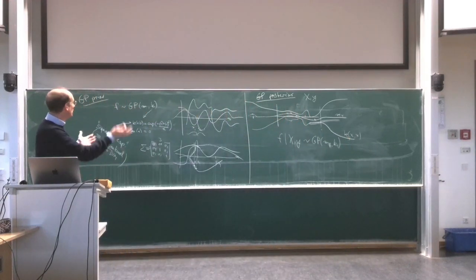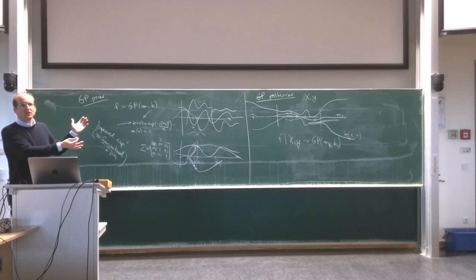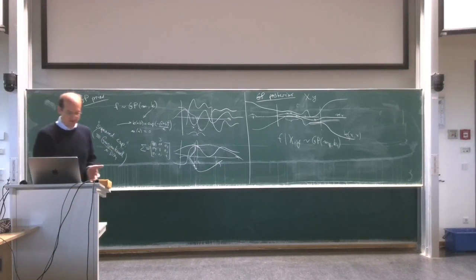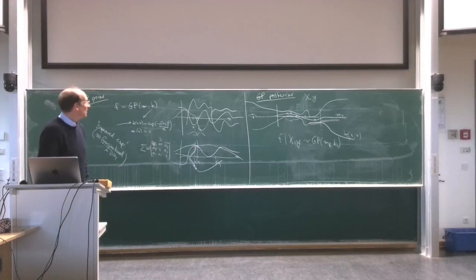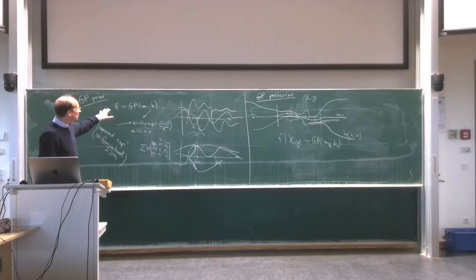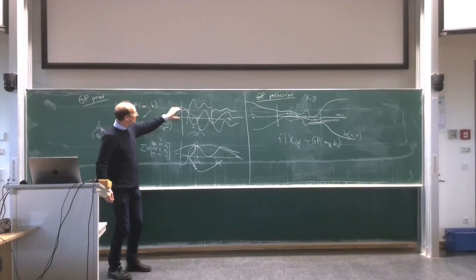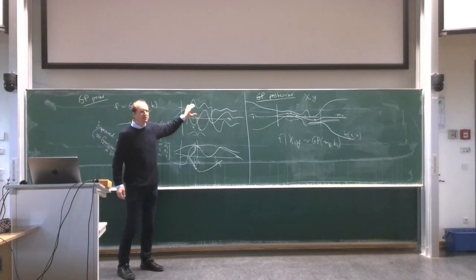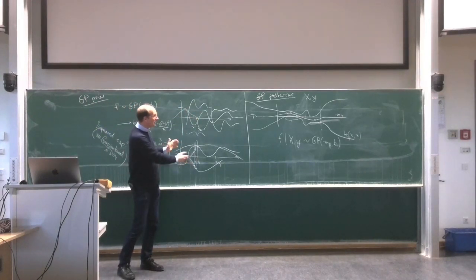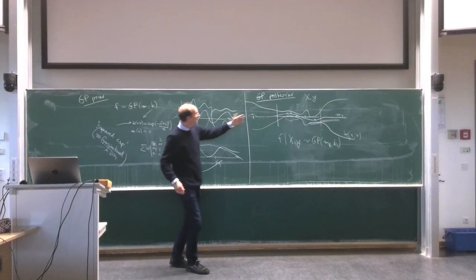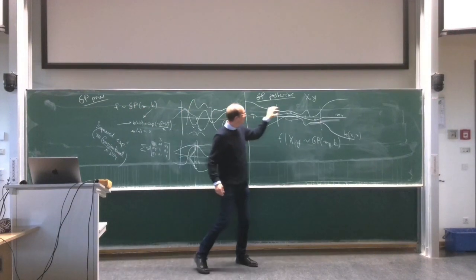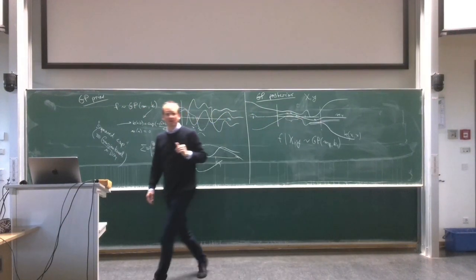This is basically the whole story of GPs. You start with a GP prior, possibly sample from it to check reasonableness, then observe data and infer a posterior GP. The rest of the lecture will get into the details and derive formulas. The idea is: start with a GP prior, see some data, infer a posterior GP.